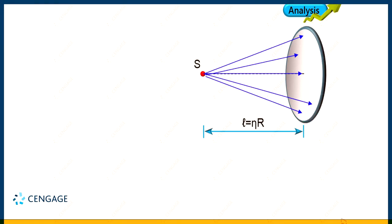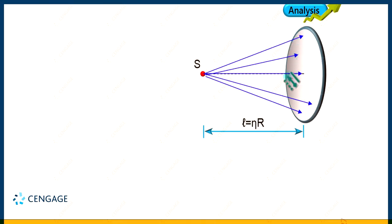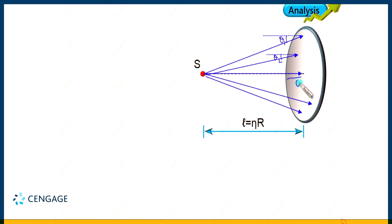Also, you can observe that the angle between the direction of the radiation and the normal to the surface is not constant. Here, this angle with the normal is theta 1, and here the angle is theta 2, and at the centre the angle is 0 degrees. That means at each and every point, the angle between the direction of the radiation and the normal is different. This illustration is therefore different from the previous ones.